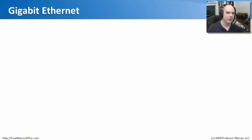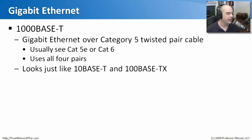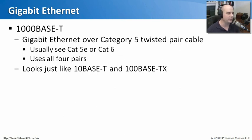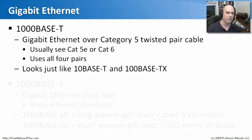Soon after 100 megabit ethernet, we wanted Gigabit Ethernet, or GigE. The copper cable type is called 1000Base-T — 1000 megabits per second, base for baseband, and T for twisted pair copper cable. This runs over Category 5, 5E, or Category 6 cable. What's interesting about this Gigabit Ethernet standard is it uses all four pairs of the cable, unlike 100 megabit or 10 megabit. Looking at it from the outside, it looks exactly the same cable. Just remember that 1000Base-T uses all of the pairs within it.